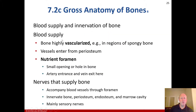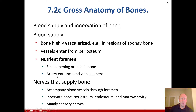Regarding blood supply and innervation: bone is a living organ and is highly vascularized. Blood supply reaches the spongy bone in particular, with vessels entering from the periosteum and through the nutrient foramen. The nutrient foramen is a small opening in the bone where the artery enters and the vein exits. Nerves that supply the bone accompany the blood vessels through that foramen, innervating the bone, periosteum, endosteum, and marrow cavity — they are mainly sensory nerves.